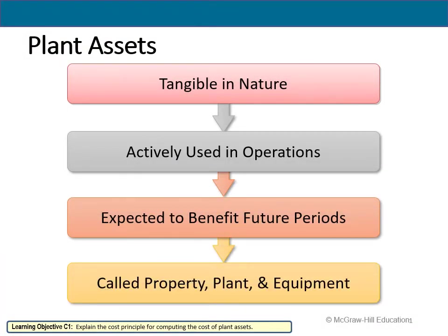In chapter eight we're talking about plant assets — tangible assets, which means they have physical presence; you can see and touch them. The opposite would be an intangible asset like a patent or a copyright. In this chapter we're talking about tangible assets with a physical presence that are actively used in operations, meaning used in the company's day-to-day operations and expected to benefit future periods.